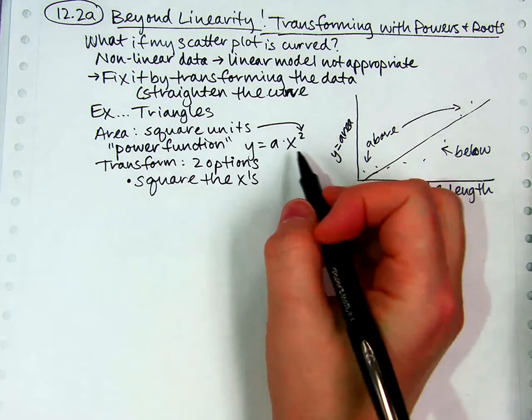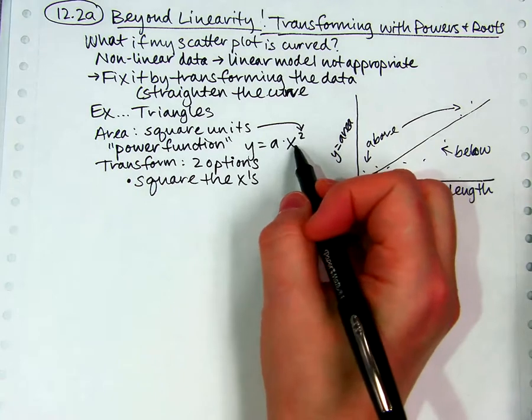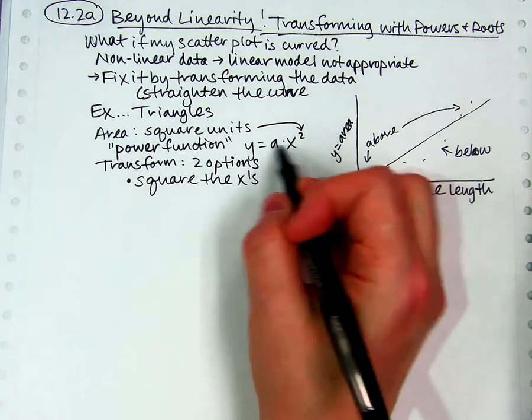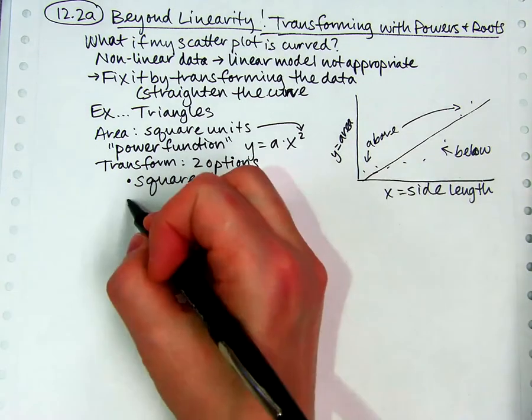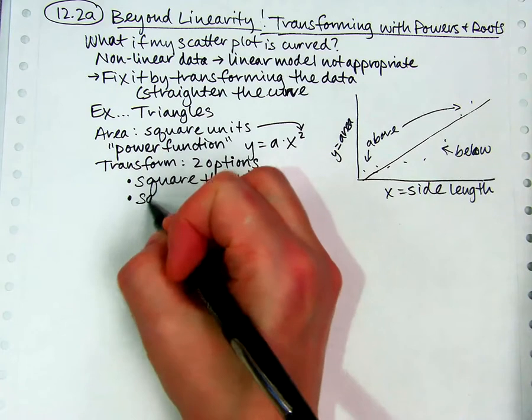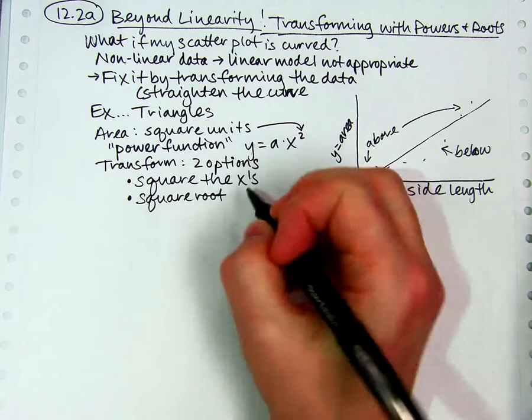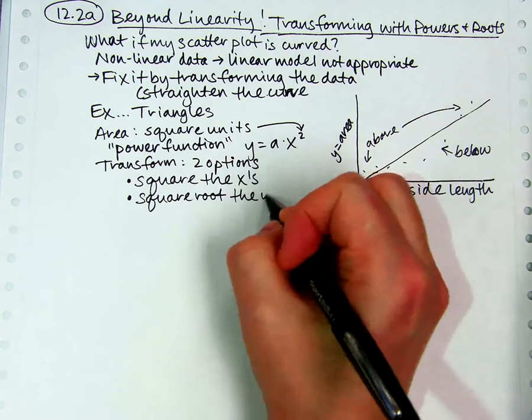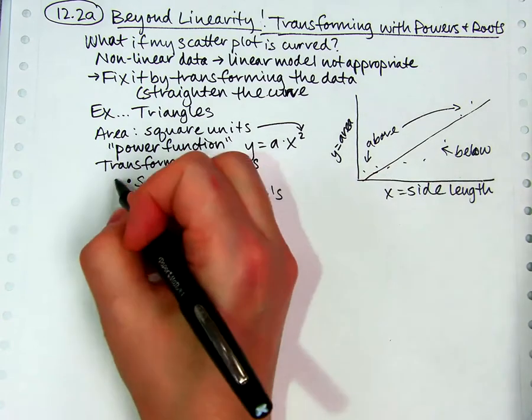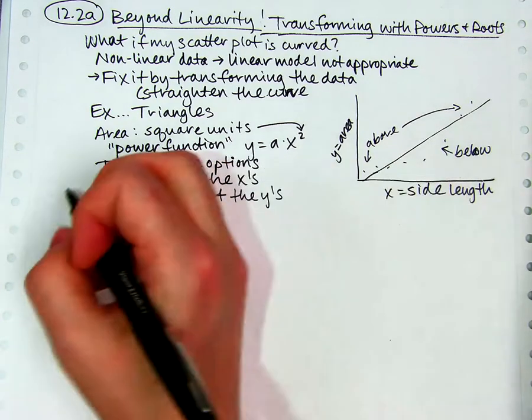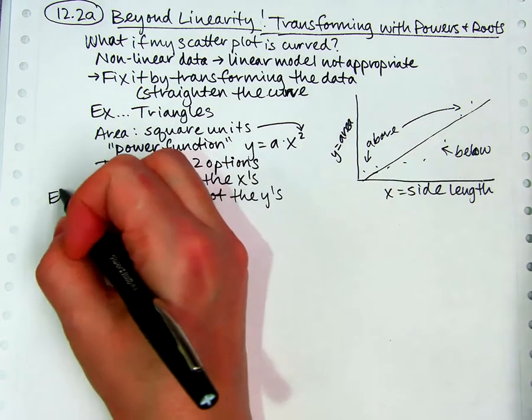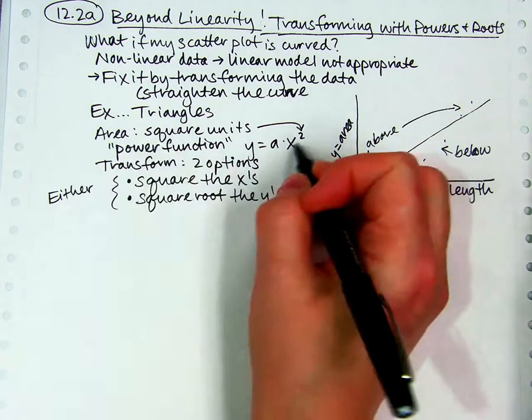Or I could do the opposite and say, let's say I wanted to leave the x's alone and not mess with them. But I could do something to the y. I could do the opposite and square root the y's. Remember, square root is the opposite of squares. And either one of these should straighten the curve if it really was based on x squared.